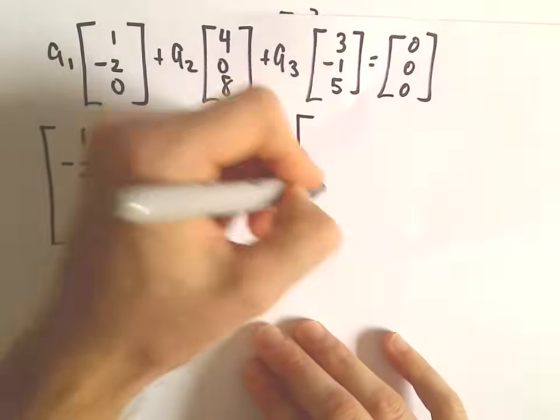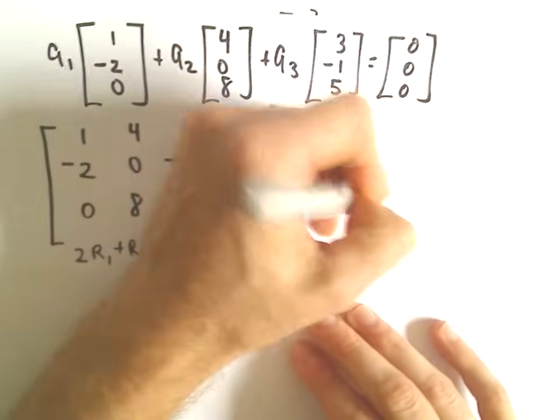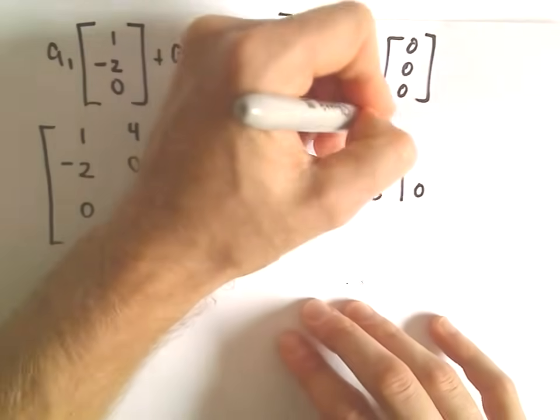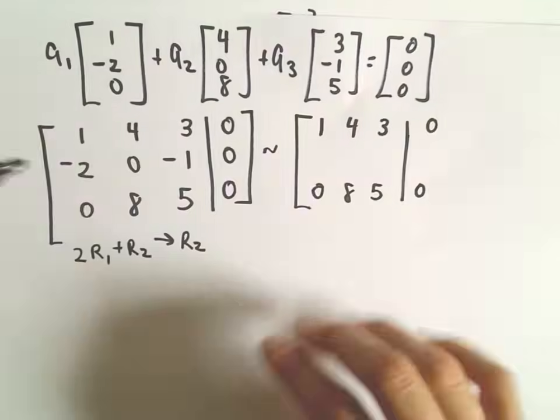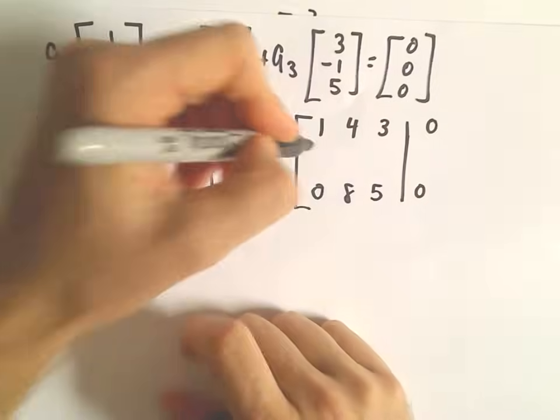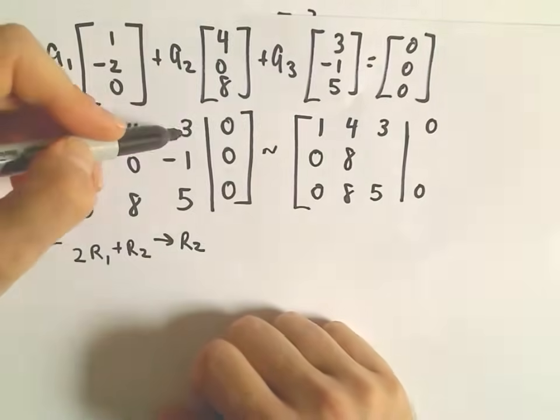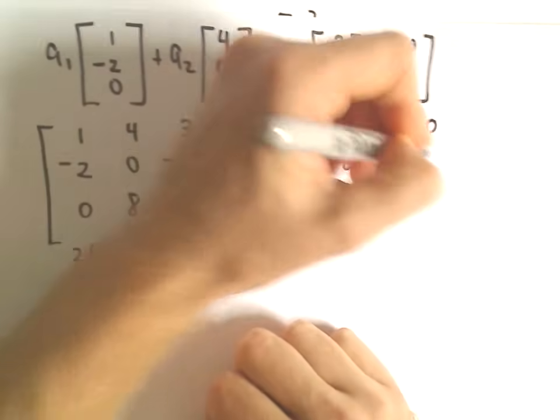So if we do that, let's see, the bottom row we're going to leave alone. The first row we're going to leave alone. The second row, so 2 times 1 plus negative 2 is 0. 2 times 4 plus 0 is going to give us 8. 2 times 3 minus 1 is going to give us 5.